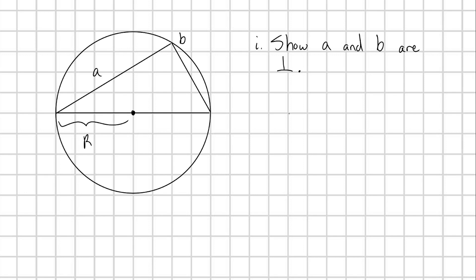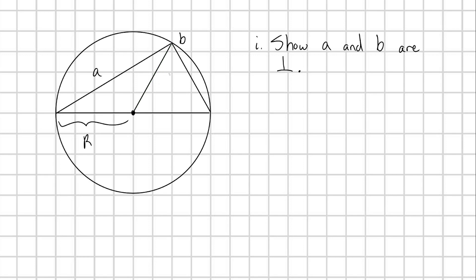I've inscribed a triangle here in this circle, and this triangle has one of its legs along the diameter of the circle. So this half length here is going to be equal to the radius r of the circle. What I want to do is show that a and b are perpendicular to each other. To show this, let's start by drawing a line from the intersection of a and b to our circle center — this of course also has a length of r, since it's just the radius of our circle.